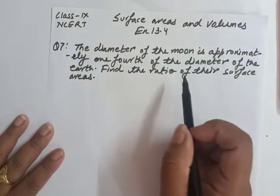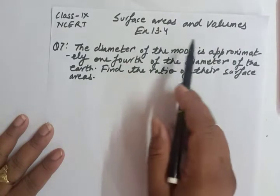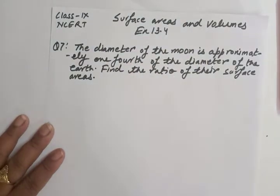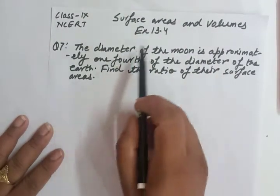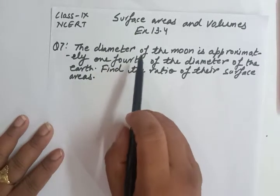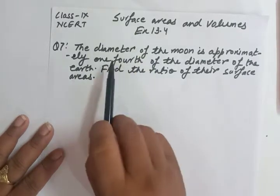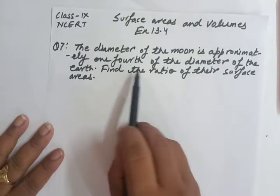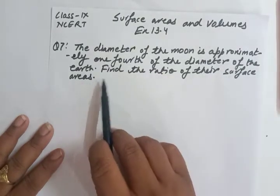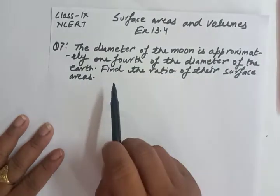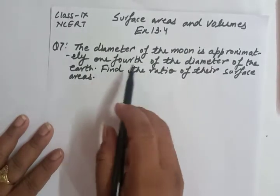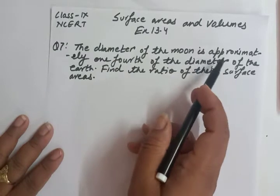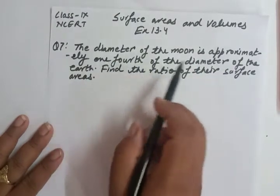Hello students, Chapter Surface Areas and Volumes, Exercise 13.4, Class 9. I have taken Question Number 7 of NCERT Exercise 13.4: the diameter of the moon is approximately one-fourth of the diameter of the earth. Find the ratio of their surface areas.